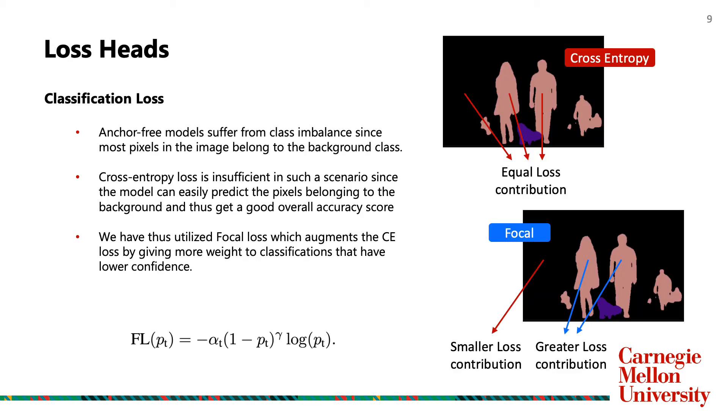Object detection models face a class imbalance problem due to more number of points in the background class leading to false positives. We use focal loss to tackle this. Two hyperparameters are used to overcome the foreground background bias and the imbalance of easy and hard classifications.